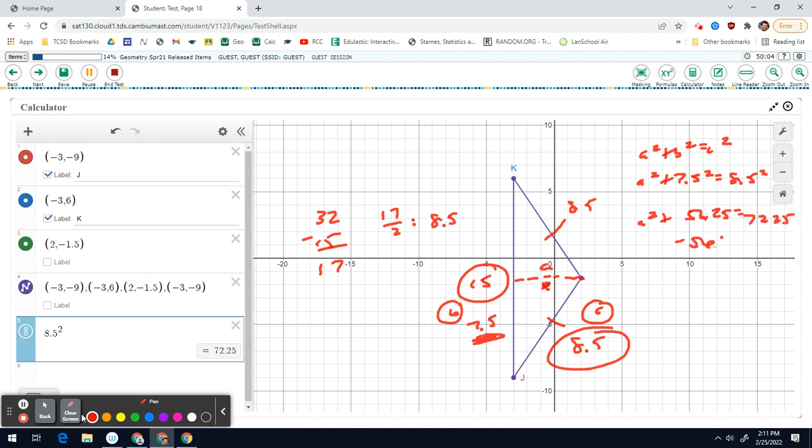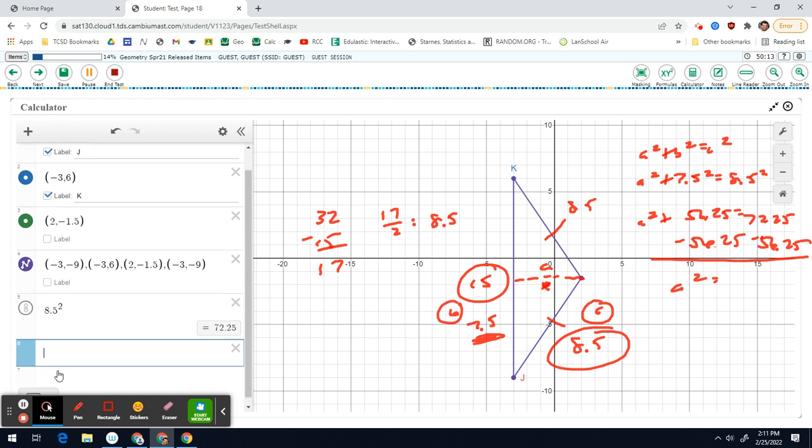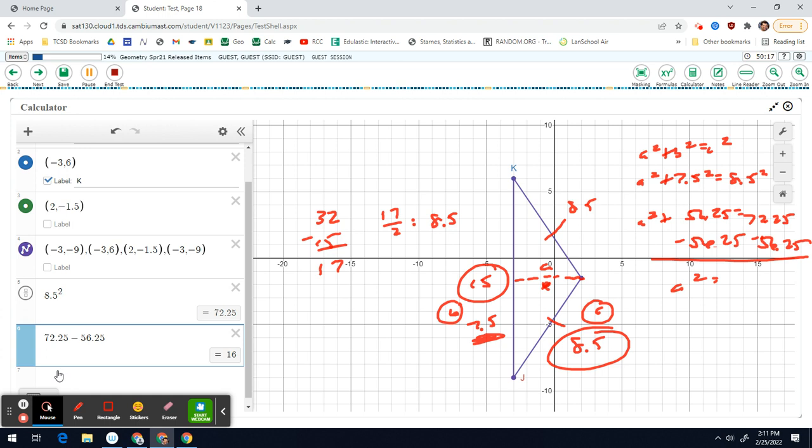So A squared plus 56.25 equals, and then we'll do 8.5 squared equals 72.25. I will subtract the 56.25 on both sides to get A squared equals, and I'll just do it right here. So we'll do 72.25 minus 56.25. That's 16.